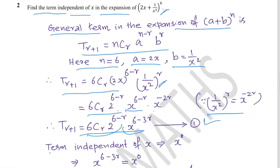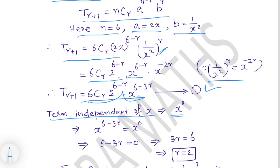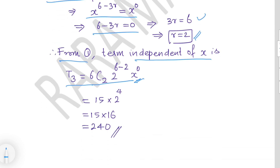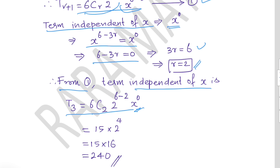Term independent of x means x^(6−3r) = x^0, so 6 − 3r = 0, giving r = 2. Substituting r = 2: T3 = 6C2 · 2^(6−2) · x^0 = 15 · 2^4 = 15 × 16 = 240. The term independent of x is 240.